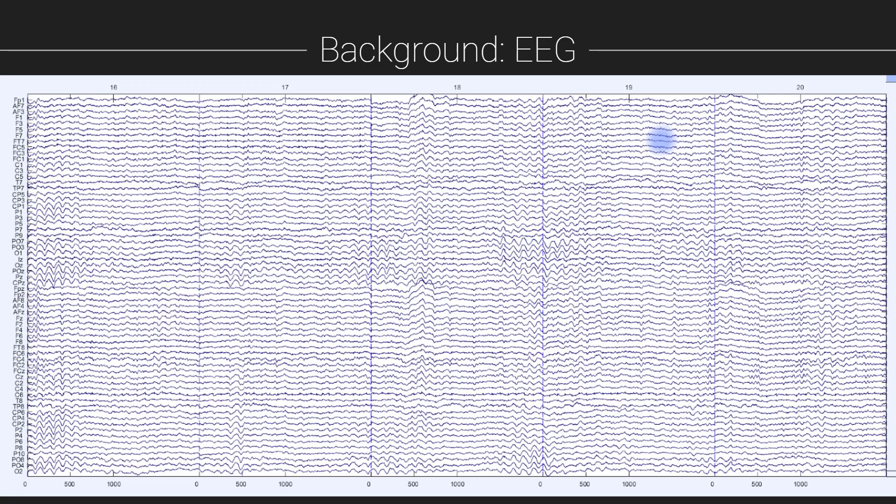Here you see an example of EEG data. So each row, each wiggly line in this image corresponds to the voltage fluctuations from one electrode, one data channel. So you can see that there were several dozen electrodes that were recorded simultaneously.